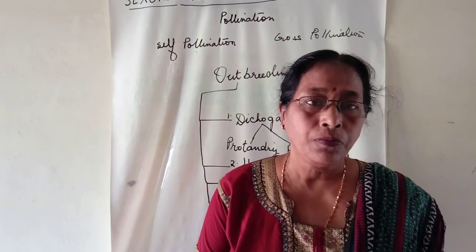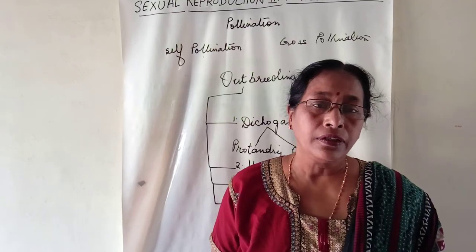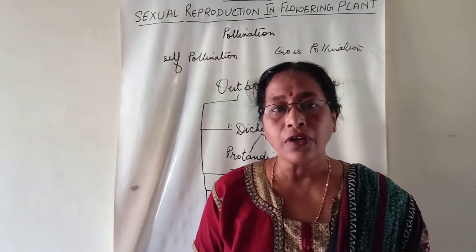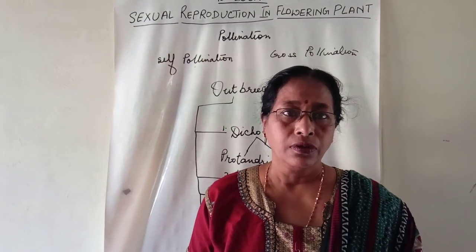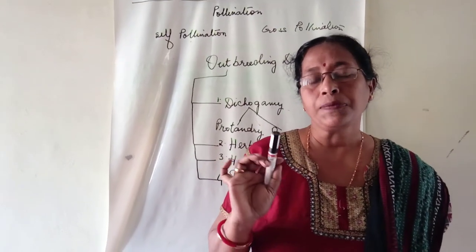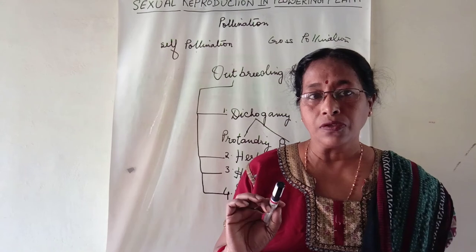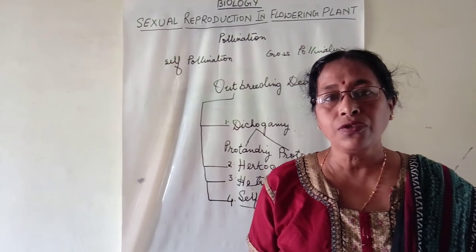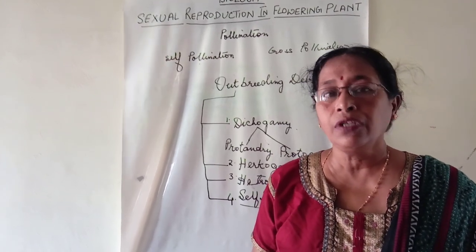We have studied about pollination, their types, their different forms, and different adaptive features. Coming to the significance of pollination: it brings the male gamete needed for fertilization, it stimulates the growth of the ovary, and it prevents the obsession or degeneration of the ovary. Cross-pollination brings variation, which results in the formation of new characters. This genetic variation is necessary for the better survival of the species.